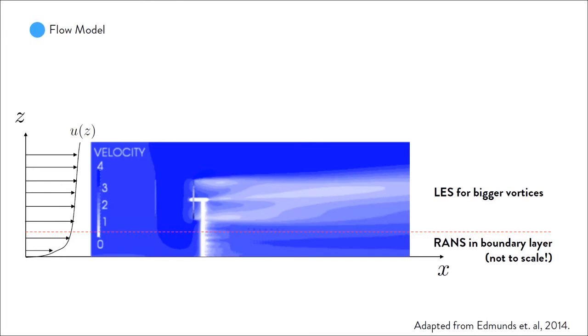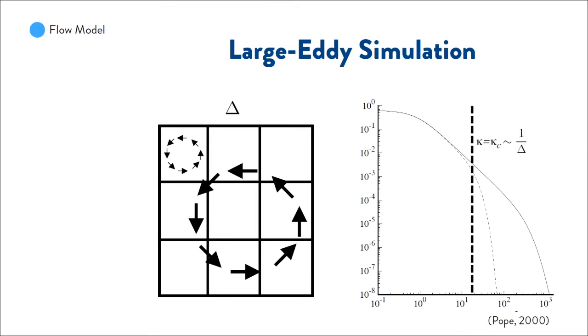So RANS does not solve all the turbulent characteristics of a flow. It just dissipates them through a viscosity. So in the parts of the flow where we don't need a lot of information and detail, for example in the boundary layer, we're going to use this RANS approach. But in other parts, when we want to solve the detail, we're using a more complex model called LES or large eddy simulation.